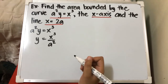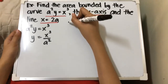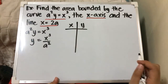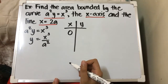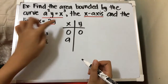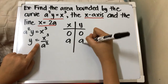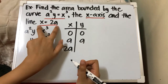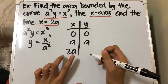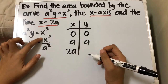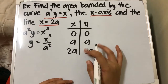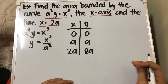This is now the function we will be plotting on our Cartesian plane. Since the equation is in terms of a, our constants are also in terms of a. If x = 0, y = 0. If x = a, then a³/a² = a. If x = 2a, then (2a)³/a² = 8a³/a² = 8a. So our key points are (0, 0), (a, a), and (2a, 8a).